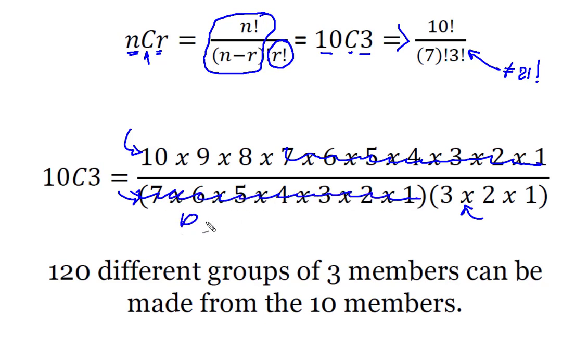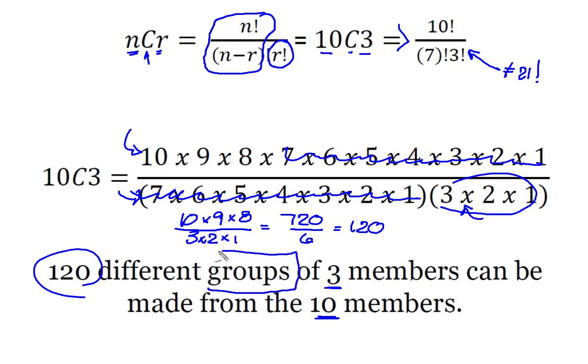And you'll notice I'm left with the same 10 times 9 times 8 that I had before. But now, I've got to divide it by my 3 times 2 times 1, which literally gives me my 720 divided by 6, which results in 120 different groups of three members that can be made from the 10 members when I'm making groups and I'm not arranging them in some kind of specific order.